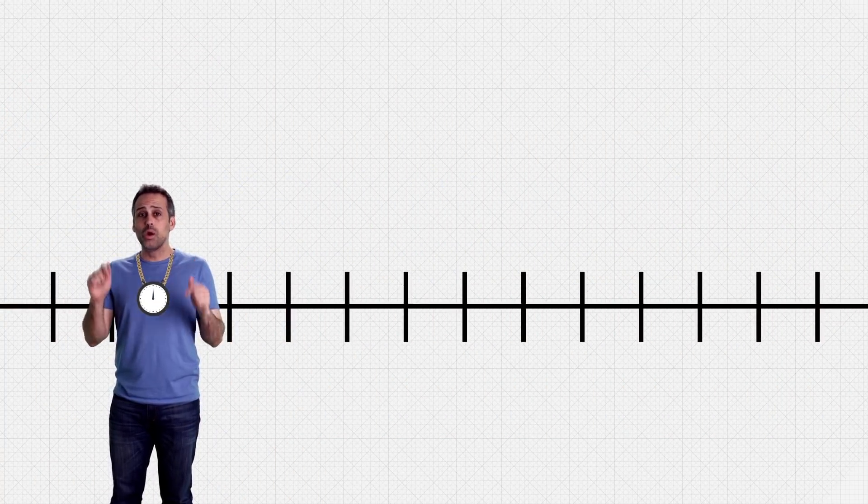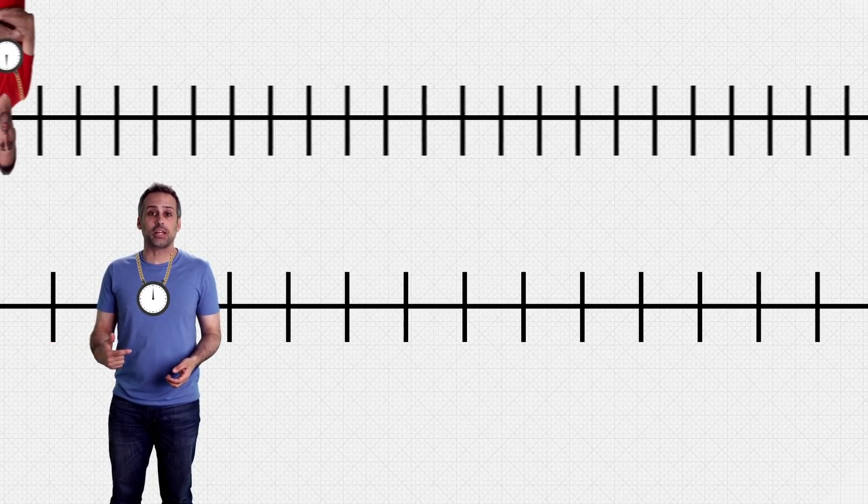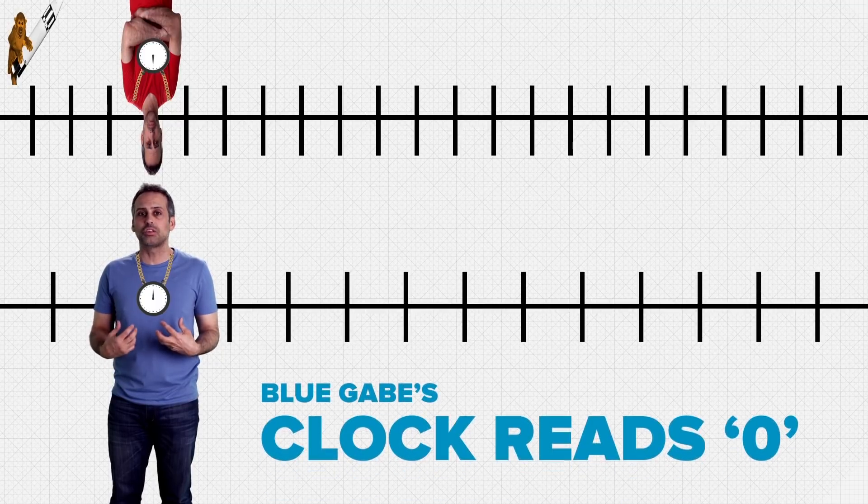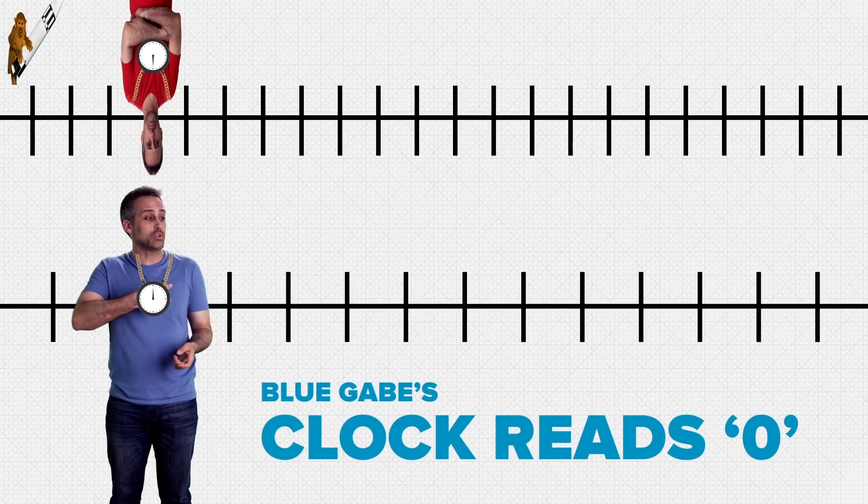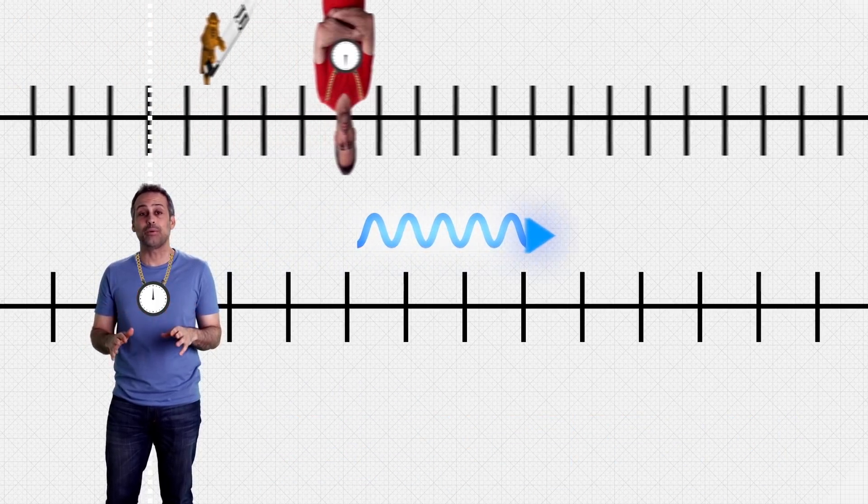All right. Now, some weirdo in a red shirt carrying his own clock and x-axis approaches me from the left at constant speed. He passes me just as my clock reads zero. And at that same moment, I shoot a photon from a laser pointer to the right. And oh yeah, this guy's towing a monkey.